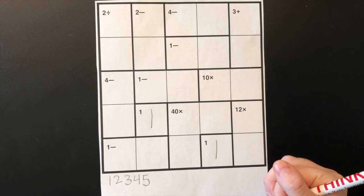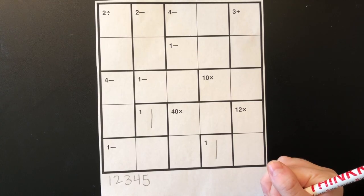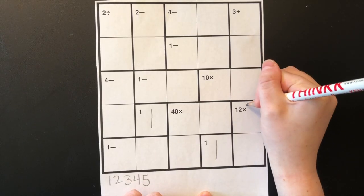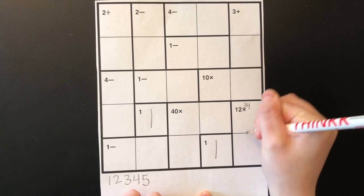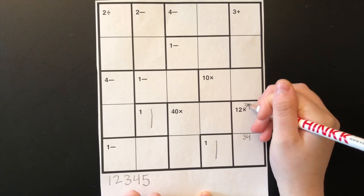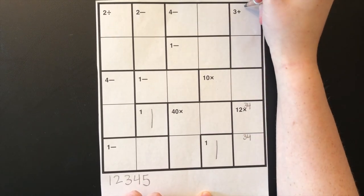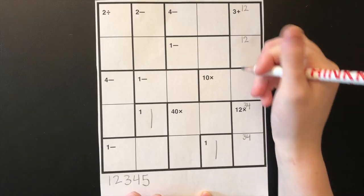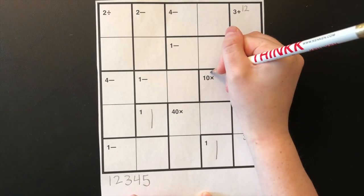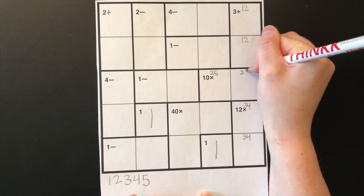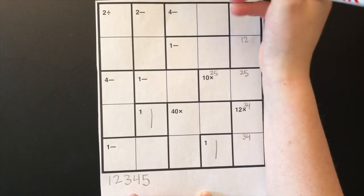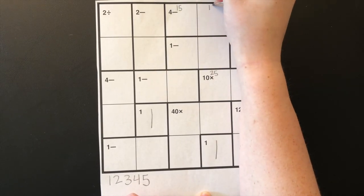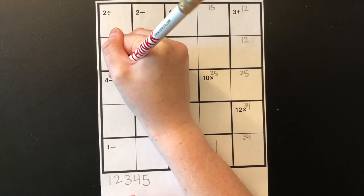Step three: fill in all of the two-possibility cages. I call those cages locked cages. Twelve times is a locked cage — it's only three times four. I don't know the order yet, so I'm just going to write the notes. Three plus also is always a locked cage; it's always one and two. Ten times is two and five. Four minus is only five minus one, so I write one and five in the notes. And four minus again over here: one and five.